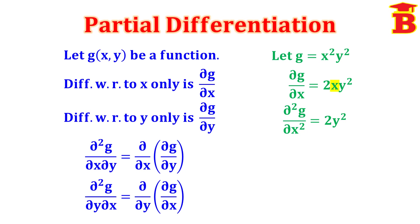Similarly, when we differentiate partially with respect to y, that is ∂g/∂y, we have to treat x as constant and differentiate y only. Here the y term is y². Differentiating y² we get 2y. Here x is constant, so we write x² the same. So differentiation of y² is 2y, giving ∂g/∂y = x²·2y = 2x²y.